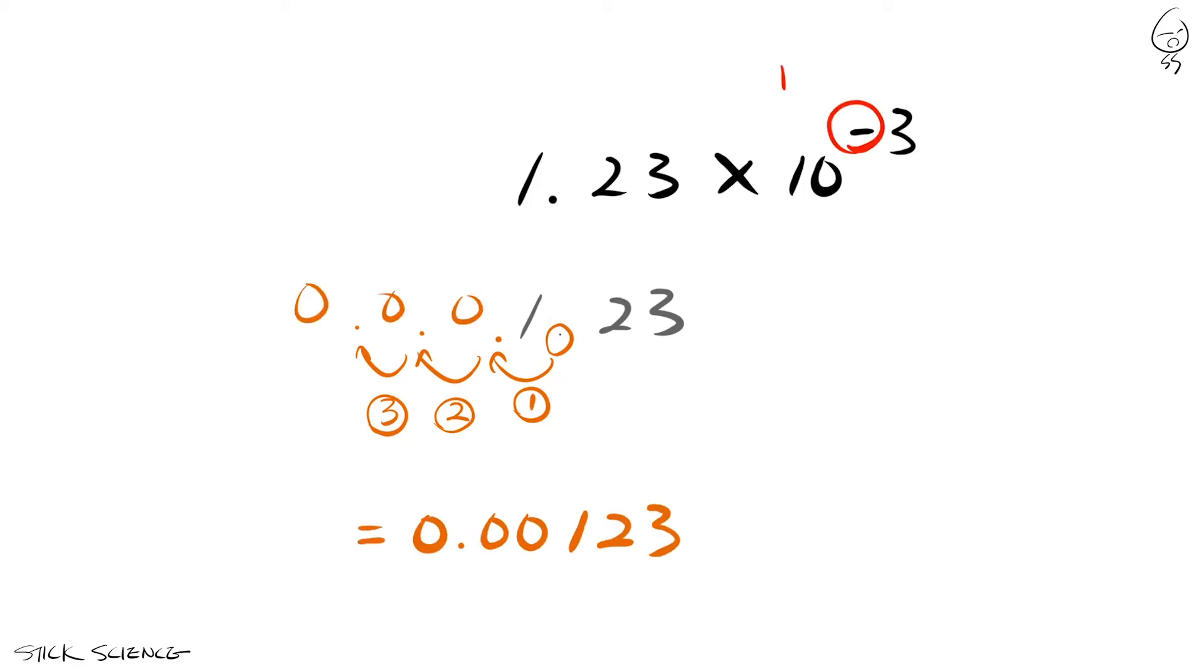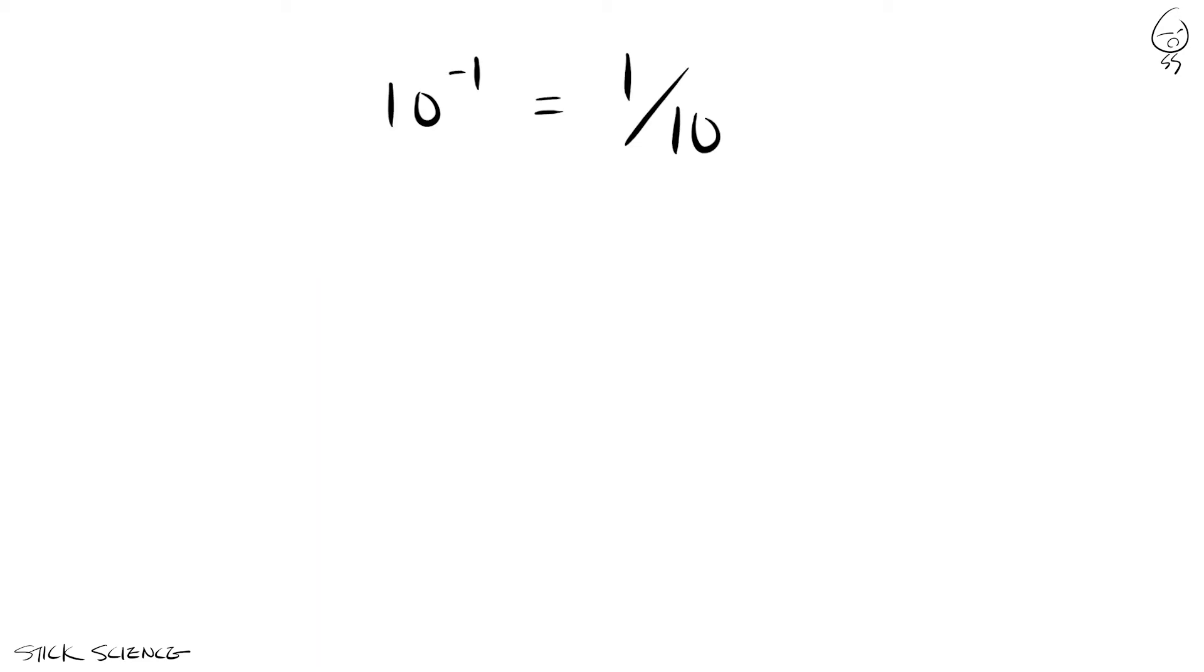The reason we change the direction is because of the negative exponent. 10 to the negative first power is just dividing by 10. And when we divide any number by 10, we move the decimal point 1 place to the left. Since 10 to the negative third power is an instruction to divide with 10 three times, we move the decimal point 3 places to the left.